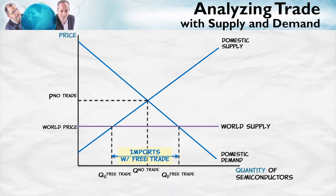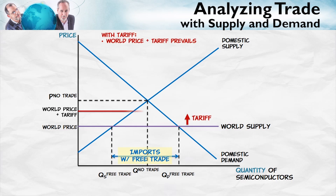A tariff is simply a tax on imports. What the tariff does is it raises the world price by the amount of the tariff or the tax. So the world supply curve, or the world price, shifts up until we get to the new equilibrium.